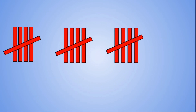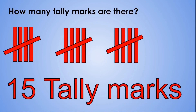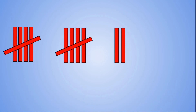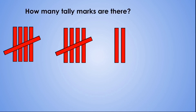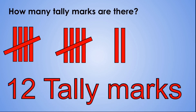Let's take a look at the next one. How many tally marks are there? Let's count together: 5, 10, 15. There are 15 tally marks. And the next one — how many tally marks are there? Let's count together: 5, 10, 11, 12. There are 12 tally marks.